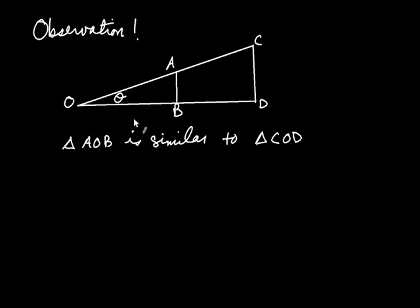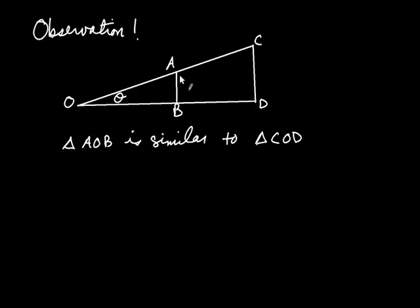I have drawn two triangles here. The first triangle is triangle AOB, and the second triangle is the big triangle, COD. Now they share the common angle theta, and AB is parallel to CD.